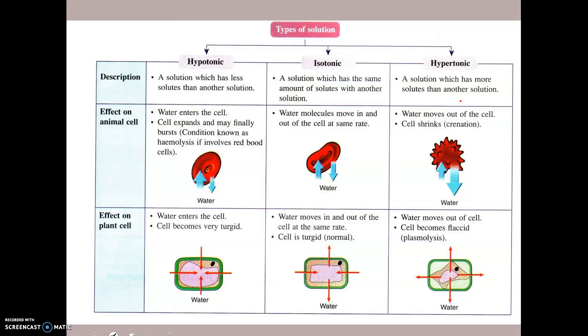Here are some examples. Red blood cells — in a hypotonic solution, the cell will swell and might even burst. In an isotonic solution, water goes in and out equally. In a hypertonic solution, the cell would shrivel up. This can actually happen to your red blood cells if you got really dehydrated.